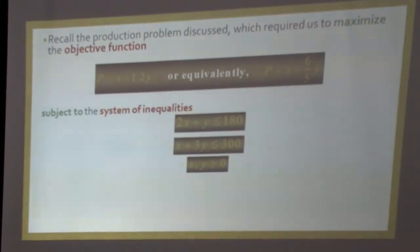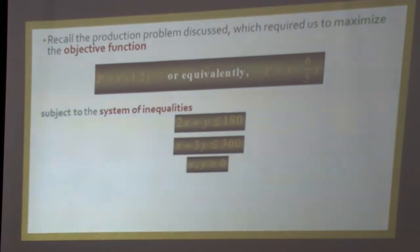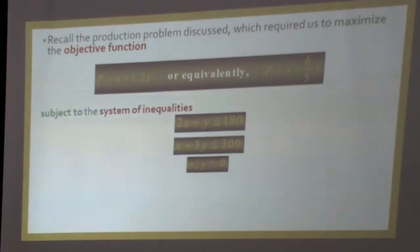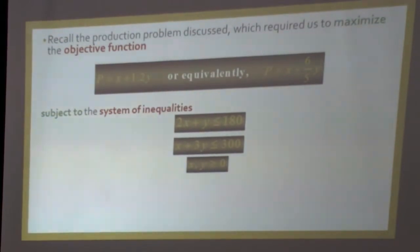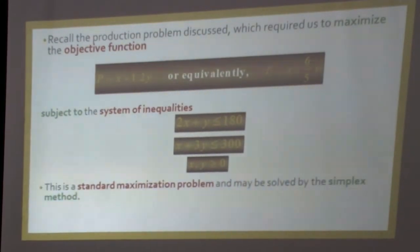Let us apply the simplex algorithm to our production problem. The objective function P = X + 1.2Y can be rewritten as P = X + (6/5)Y, subject to 2X + Y ≤ 180, X + 3Y ≤ 300, and X, Y ≥ 0. To solve this, we add slack variables to convert the inequalities into equations.